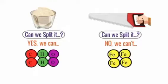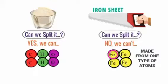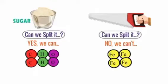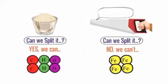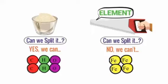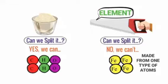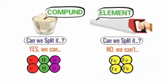For iron, we cannot split it into two or more atoms. Therefore iron is made from one type of atom, while sugar is made from three different atoms. So iron is an element because it has only one type of atom, while sugar is a compound because it is made from three different atoms.